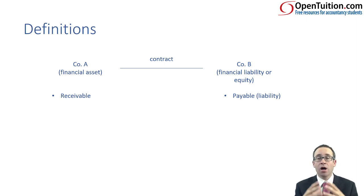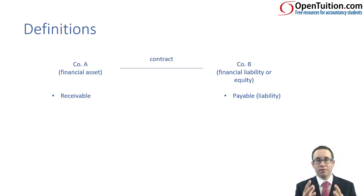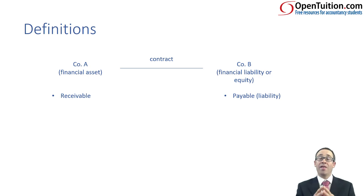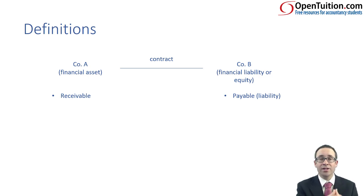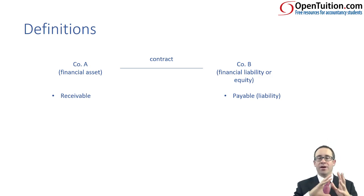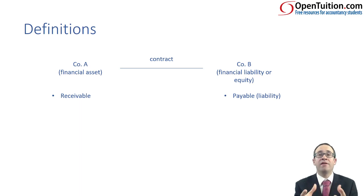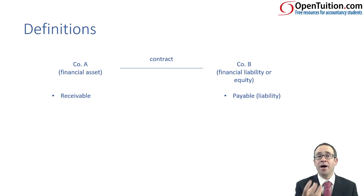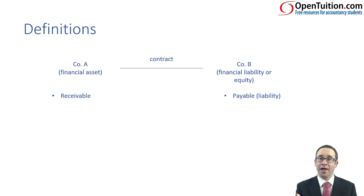Receivables and payables are governed by the standards covering financial instruments. Your receivable is a financial asset, and that financial asset could be impaired. So forget about irrecoverable debt and allowance for doubtful receivables — we need to impair that financial asset. The rules for the impairment of a receivable are covered within IFRS 9, and we'll touch upon that later.